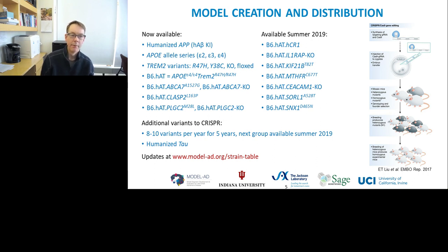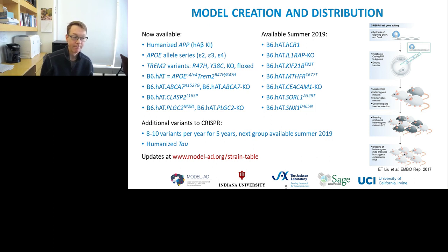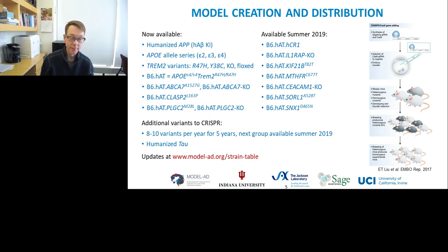Coming this summer, we have the next round of variants including humanized complement receptor 1, IL-1-RIP knockout, a point mutation in KIF21B, a point mutation in MTHFR, SACHEM1 knockout, and point mutations in SORL1 and SNX1, both part of the retromer pathway. We're aiming for 50 models in total, doing about eight to ten variants per year over the five-year period — we're two years in right now. We're also humanizing the tau locus, since tau pathology is a major component of Alzheimer's disease, so we can then add additional mutations to further drive pathology according to GWAS. All models are kept in an updated table at the modelad.org webpage.